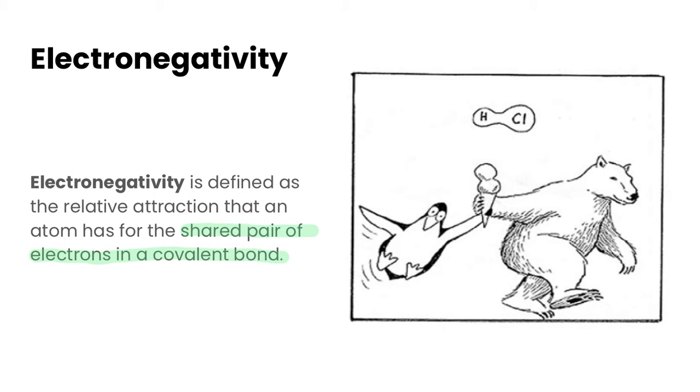that an atom has for a shared pair of electrons in a covalent bond. So we've looked at covalent bonds, we've looked at trends in electronegativity. Now we want to see how this plays into how the bonds we form in covalent compounds are affected by electronegativity.